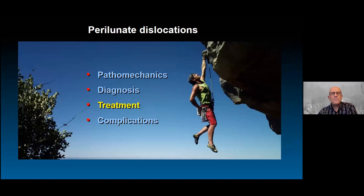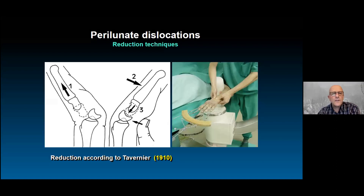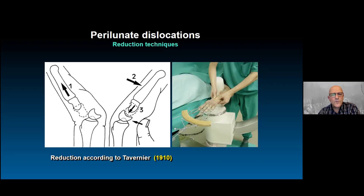Regarding treatment, all of these injuries have in common that they need to be reduced as soon as possible. The reduction must be done urgently; delay creates all sorts of problems. At 3 a.m. the dislocation must be reduced, even if definitive fixation waits. The Tavernier technique consists of applying prolonged traction to relax the muscles, applying counter-pressure with the thumb on the lunate, then flexing the capitate and metacarpals distally to reduce the dislocation.